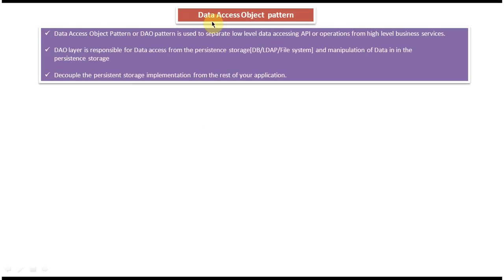Hi, in this tutorial I will cover the Data Access Object pattern, or DAO pattern. The use of this Data Access Object pattern is to separate low-level data accessing APIs or operations from the high-level business services.